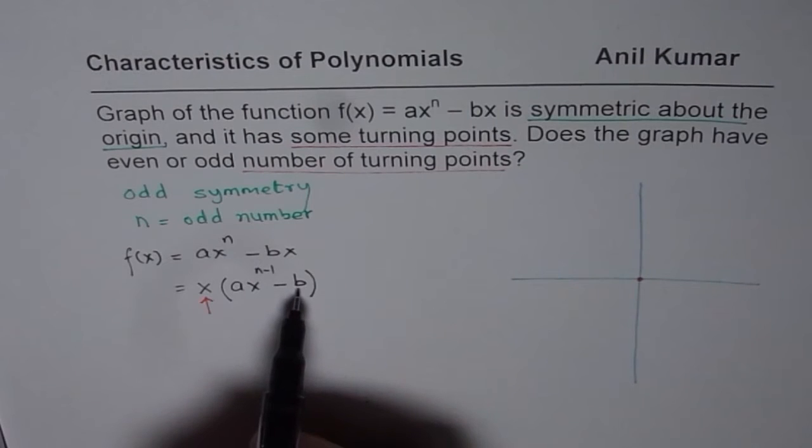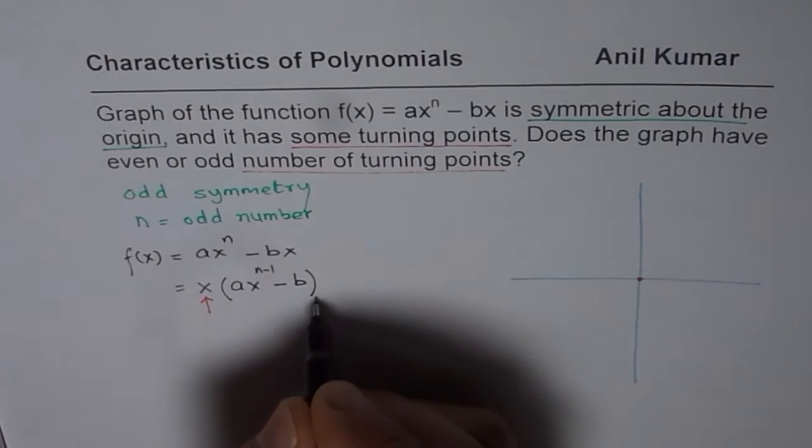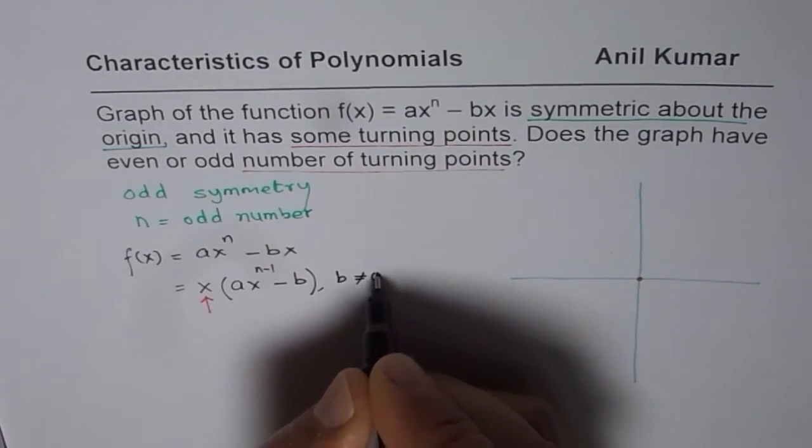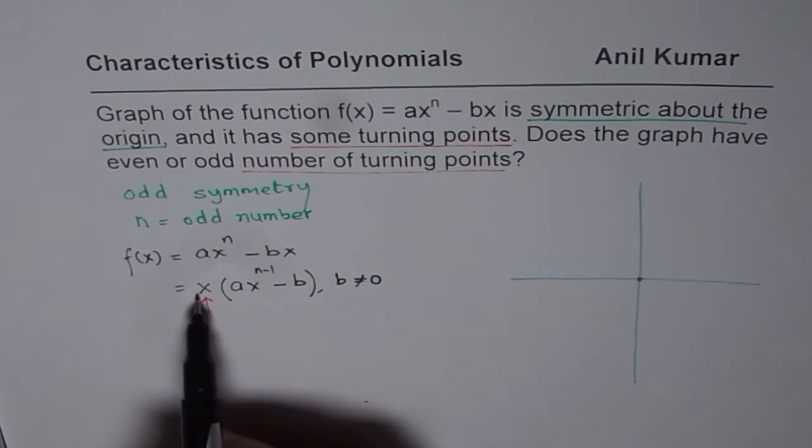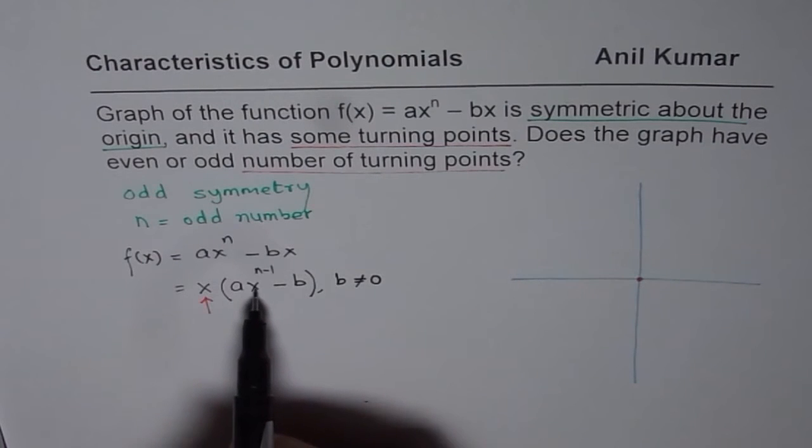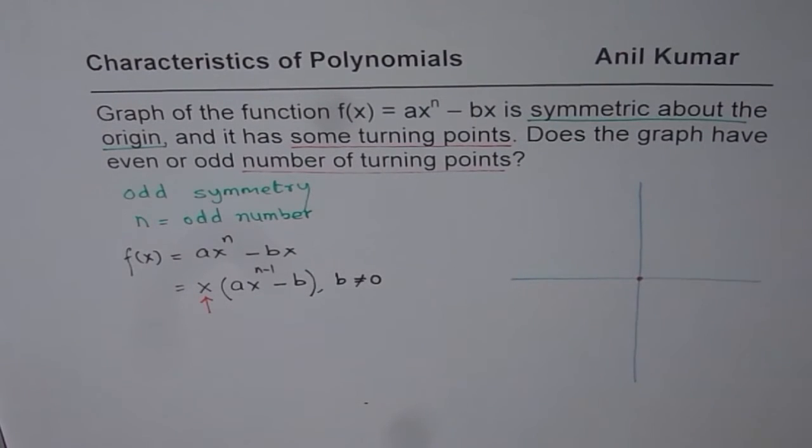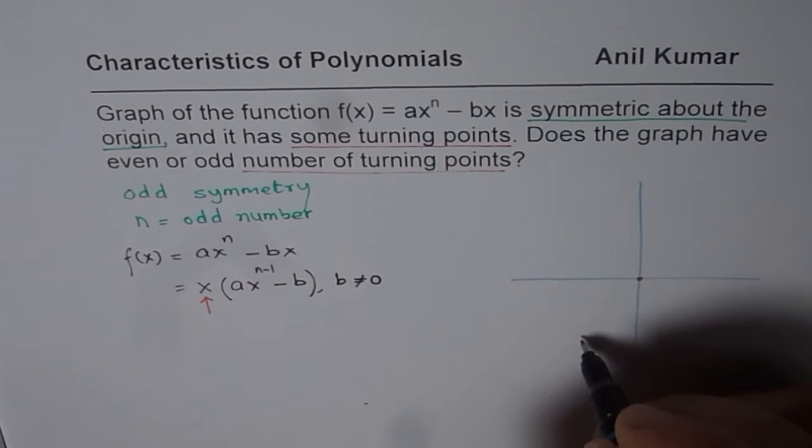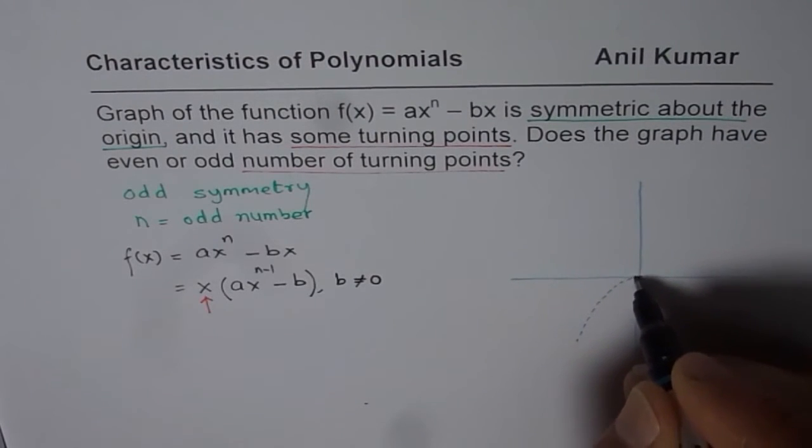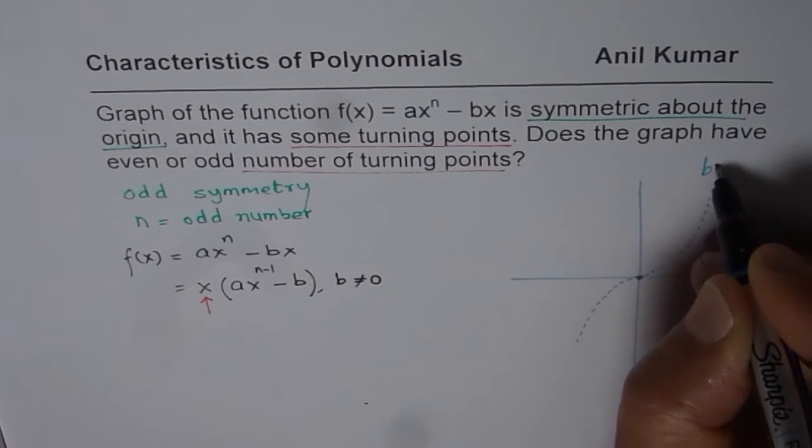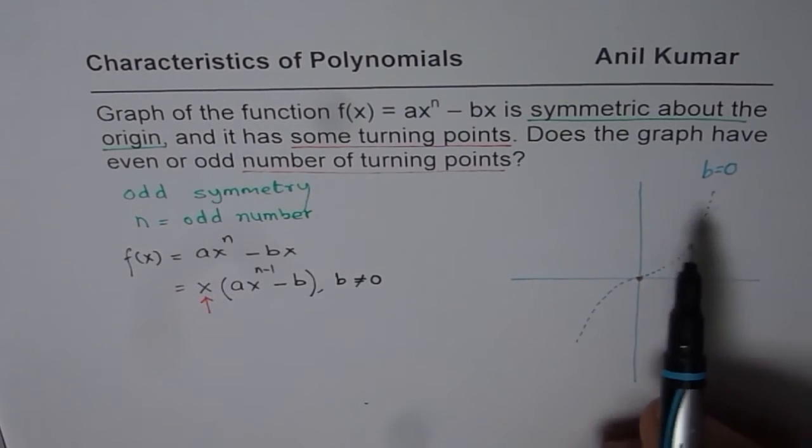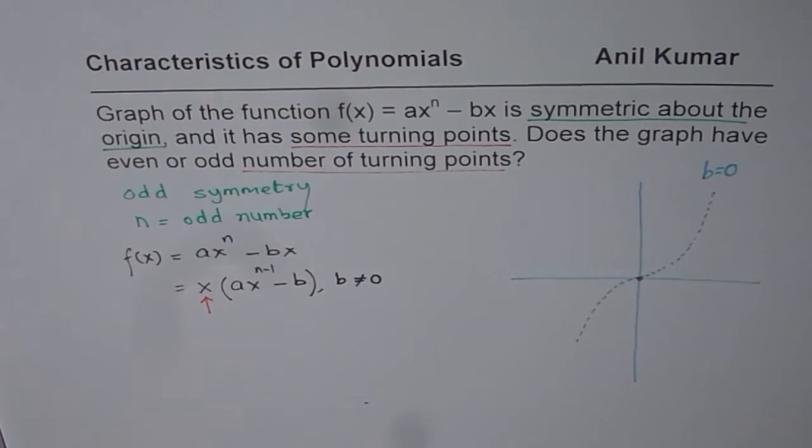Let's take some examples. Now, b for us has to be non-zero. We know b is not equal to zero. Since if b is zero, then we get zeros only at zero. So if there is only one zero, in that case the graph of the function will be a power function. This will be the graph of the function for b equal to zero. Now since there are turning points, some turning points, that means b is not zero.